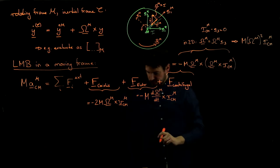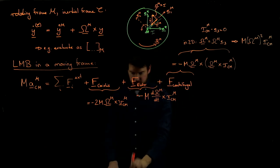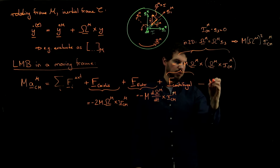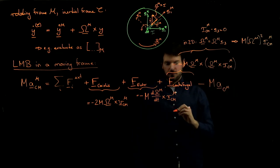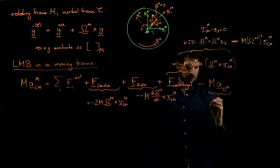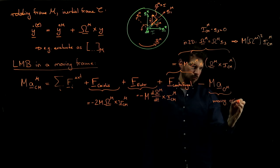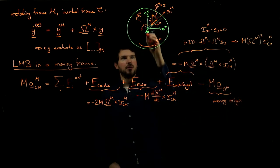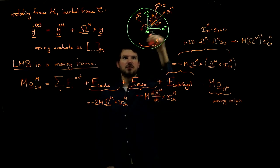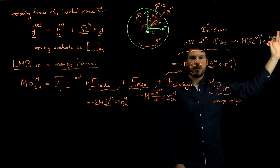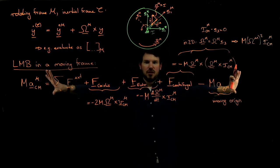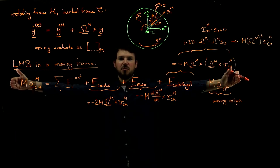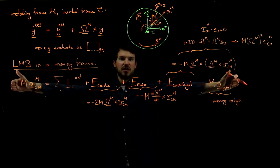There's one more term we must not forget: minus the mass times the acceleration of the origin of the moving frame — this term arises because of the moving origin. In our rotating disk example we wouldn't have this because the origin is fixed, but if the rotating system is also translating through space, the acceleration of the origin would also show up here. All of this together is linear momentum balance in the moving reference frame.